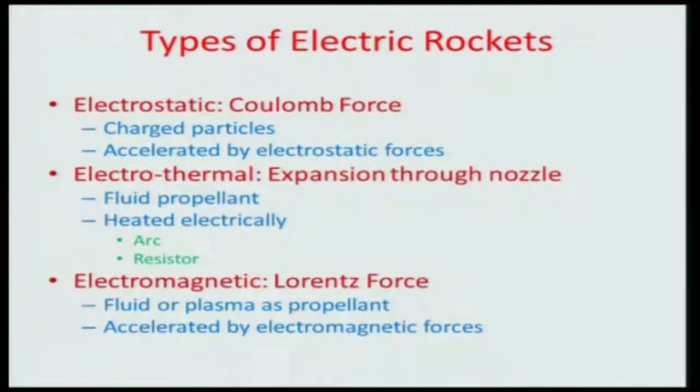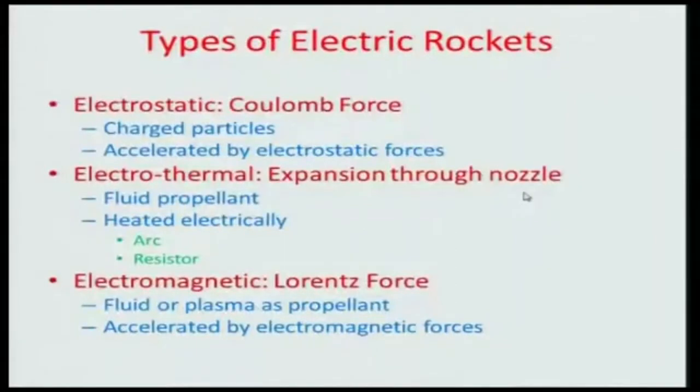Let us take up the electrothermal propulsion system first. In this system, electric heating is used. The principle of operation is that we heat the propellant using electric power and then accelerate this heated propellant through a nozzle to produce thrust. This is an expansion through a nozzle, and among all three types, this comes closest to conventional rocket propulsion because we use a converging-diverging nozzle to produce thrust.